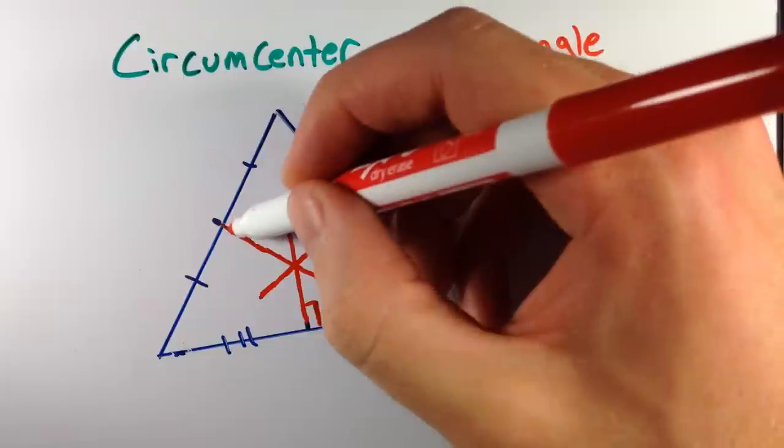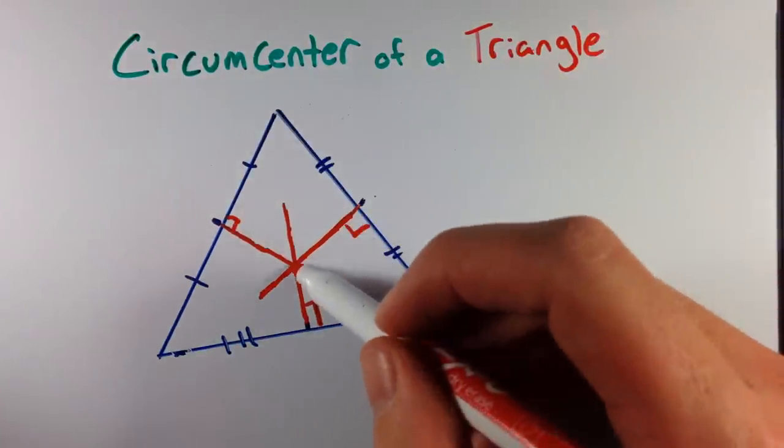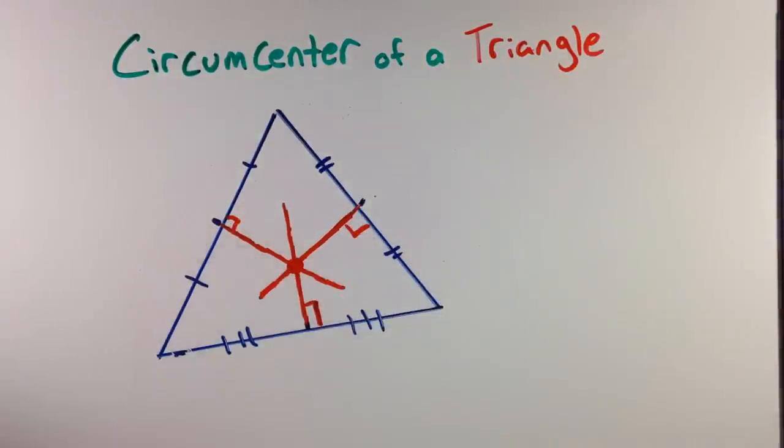And these perpendicular bisectors would all intersect at this specific point. That point we call the circumcenter.